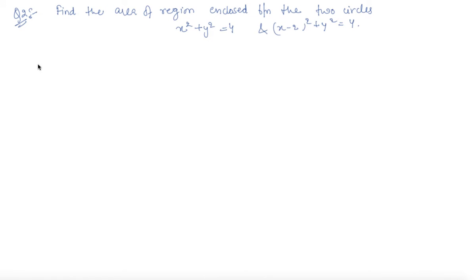So, students, here is question number 2 given to us, which states: find the area of the region enclosed between the two circles. The first circle is X square plus Y square equal to 4 and the second is here. Let me draw the picture, the first circle is somewhat like this